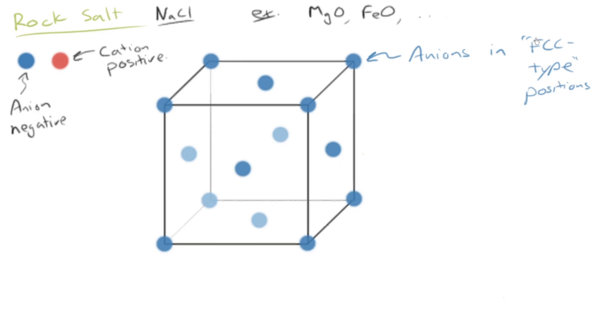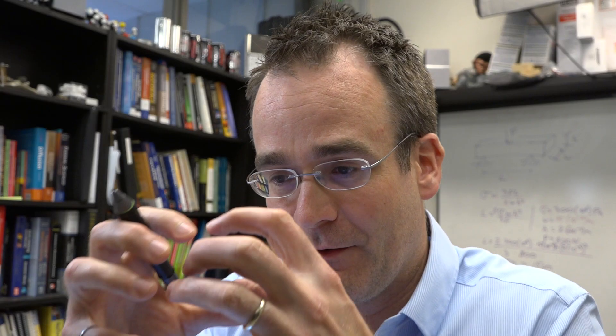Now, I say FCC-type for a reason, because the cations, which we're going to put into the spaces between the anions, can be big enough that they push the anions apart. So the anions do not necessarily touch, well, they don't touch the way they do for FCC. For FCC, they touch across the face diagonals, but for rock salt,